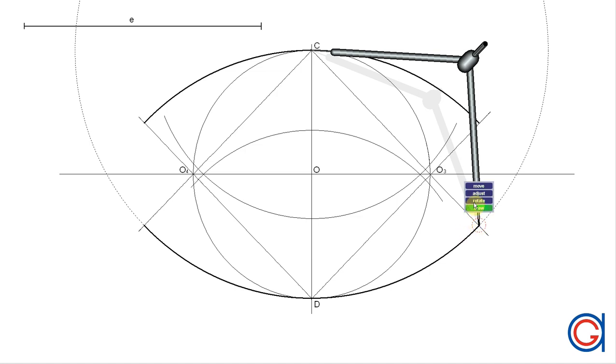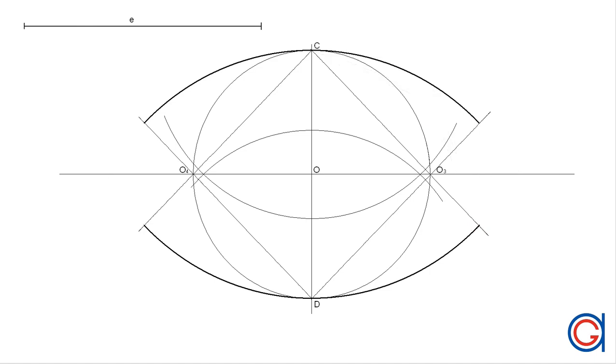Where these arcs intersect the elongated lines are the four tangent points of the oval that we want to draw, which we call T1, T2, T3, and T4.